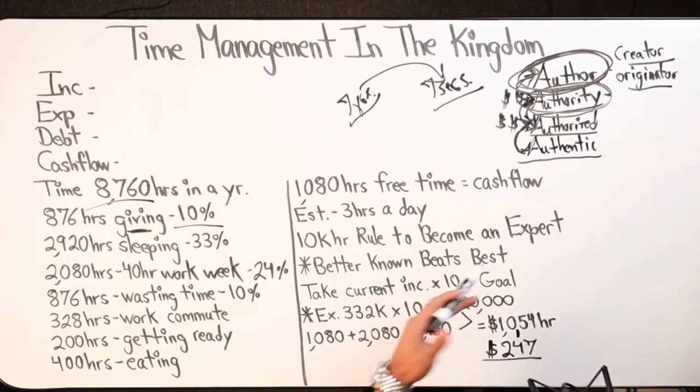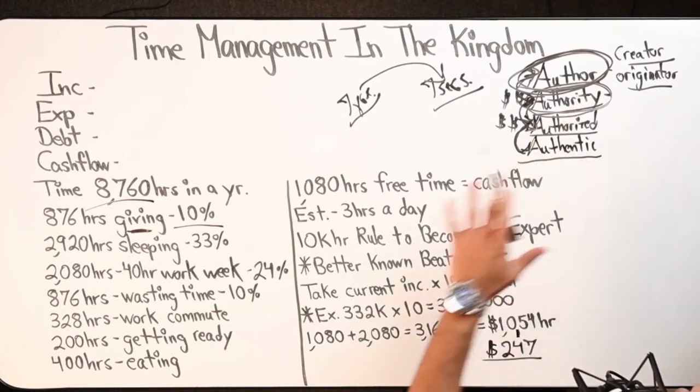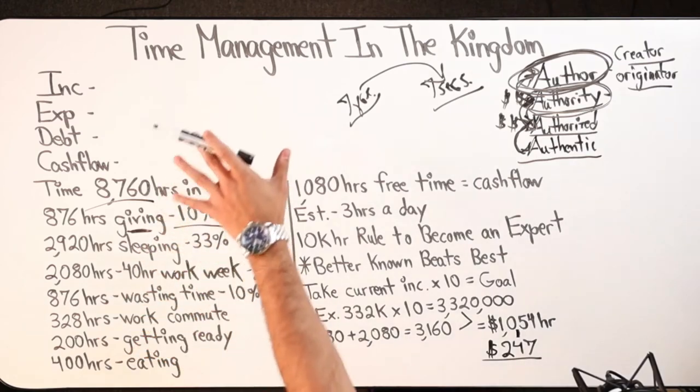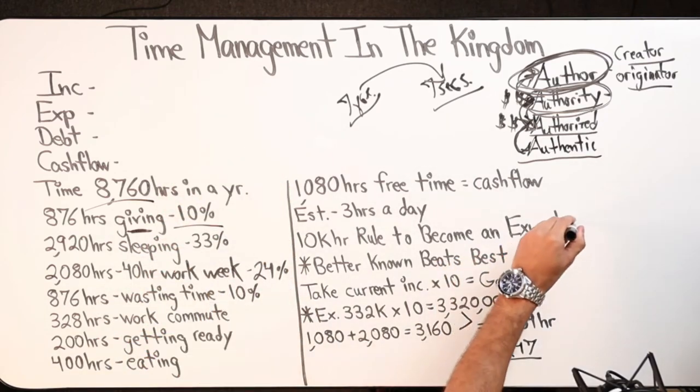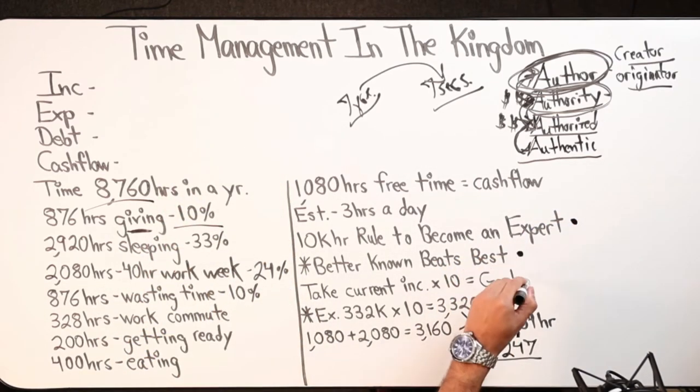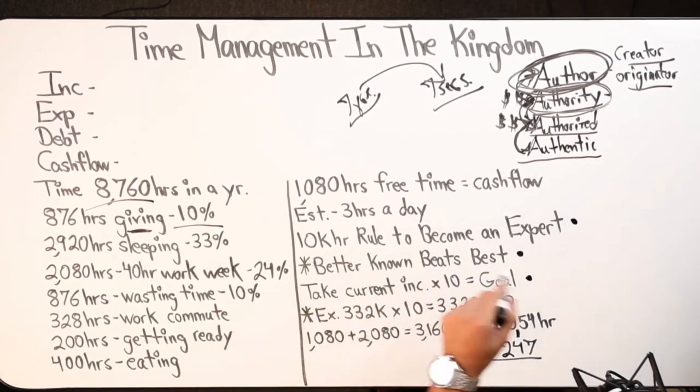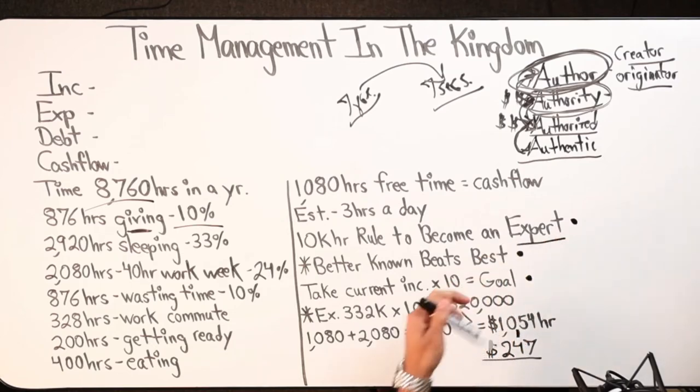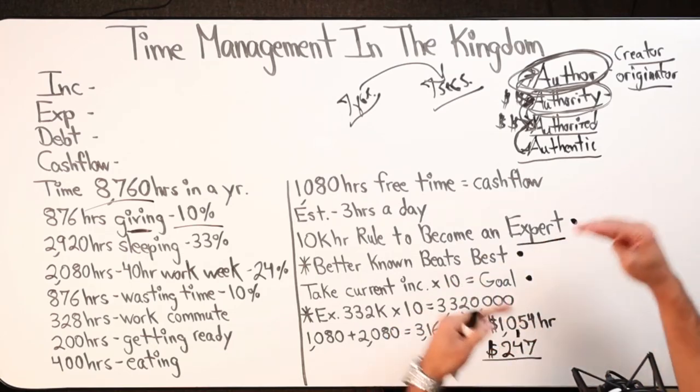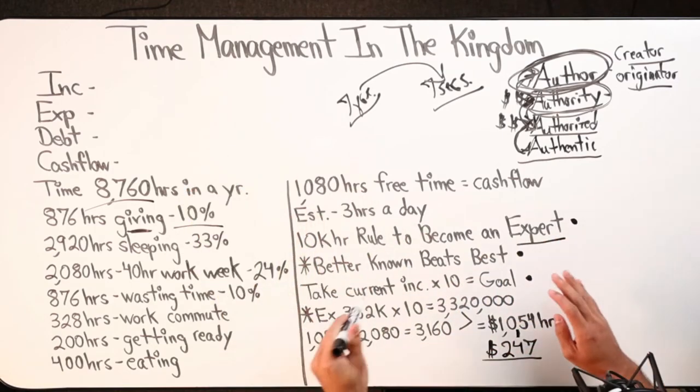So with that being said, that's my closing right there. Gave you the formula of time management. This is one rule, two rules, three rules that I have personally. I take the 10,000 hour rule, better known as beats best. So it's not that I'm first trying to become an expert to make all this money. No, no.